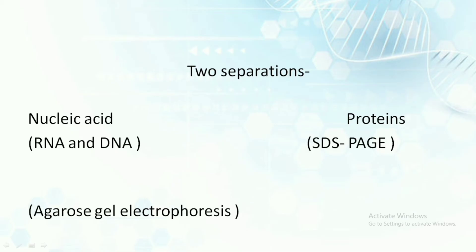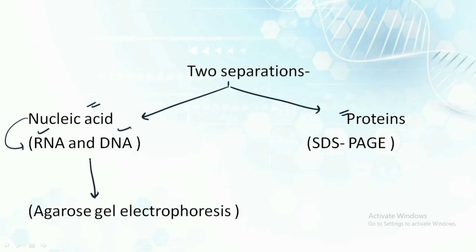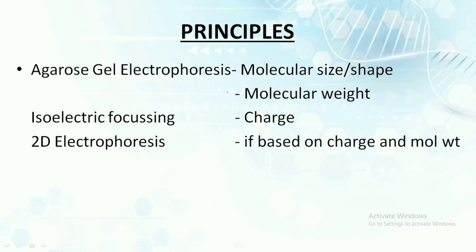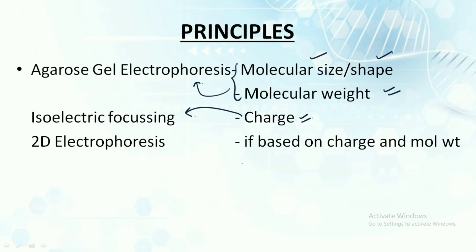We can separate either nucleic acids or proteins. If nucleic acids — either RNA or DNA — are being separated, we use agarose gel electrophoresis; if we are separating proteins, we use SDS-PAGE. If molecular size, shape, and molecular weight are the criteria, we perform agarose gel electrophoresis. If separating based on charge, isoelectric focusing is used. If the principle is based on both charge and molecular weight, it is 2D electrophoresis.